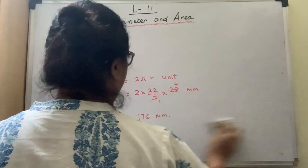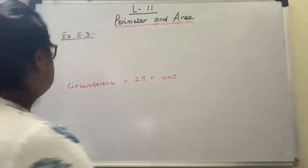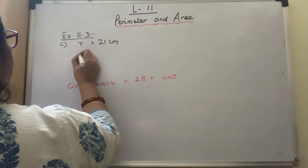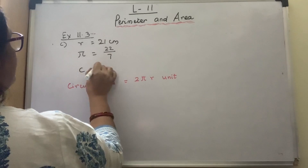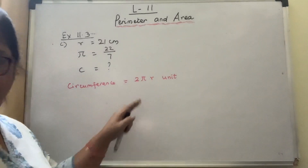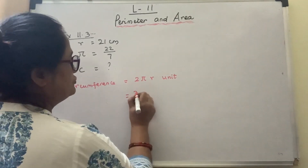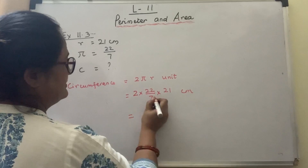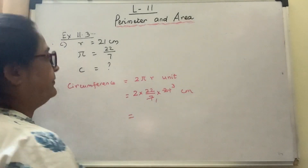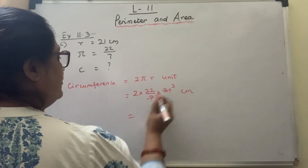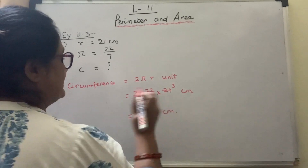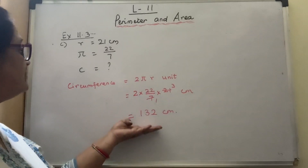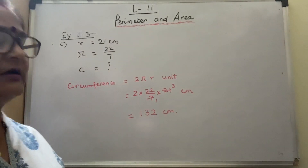Now number C. Radius is given as 21 cm, pi is 22 upon 7, and circumference you have to find. Using the same formula: Circumference = 2πr = 2 × (22/7) × 21 cm. Cancel: 7 into 21 gives 3, so 44 × 3 = 132 cm. That will be the circumference. After each sum, draw a line without cutting the margin. After number C, draw the line cutting the margin. Do your work very neatly.